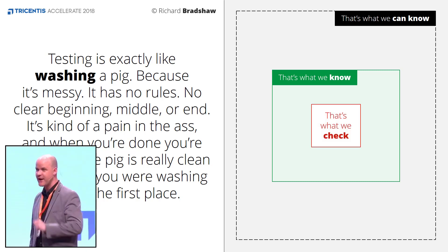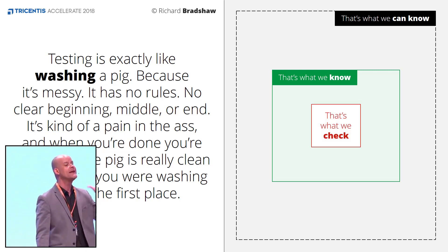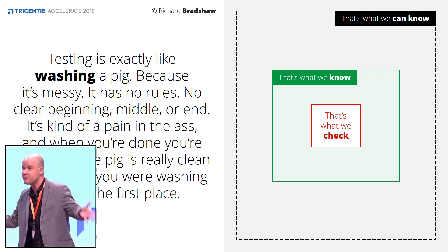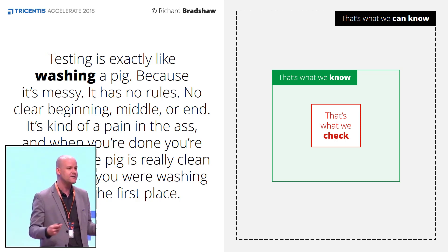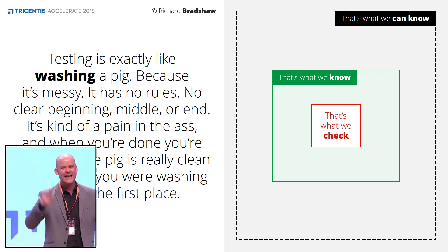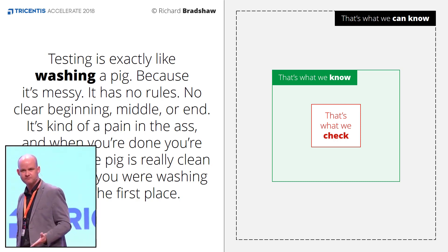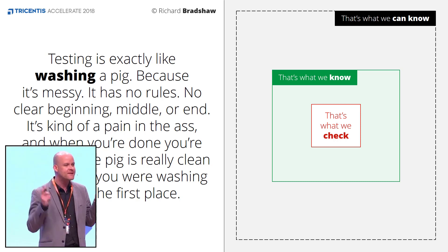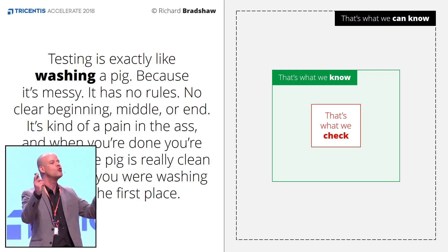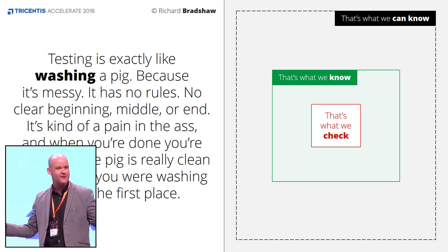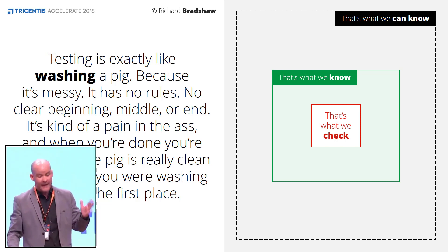Now, the red rectangle represents all what you repeatedly check — for example, through test automation in your software. And again, this rectangle is smaller than the previous one, because you will never be able to check everything at any time in your software. And here the question is: would it even make sense to aim, to codify, to automate all your knowledge? Well, most people would say yes, that's the ultimate goal. But I'm saying no.